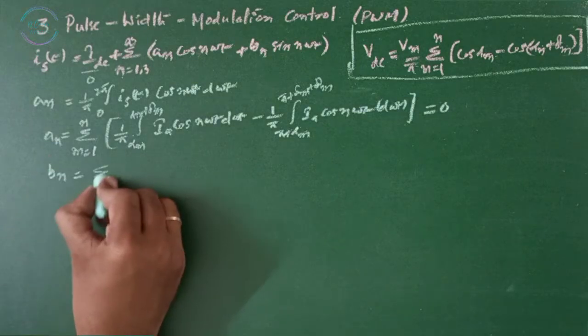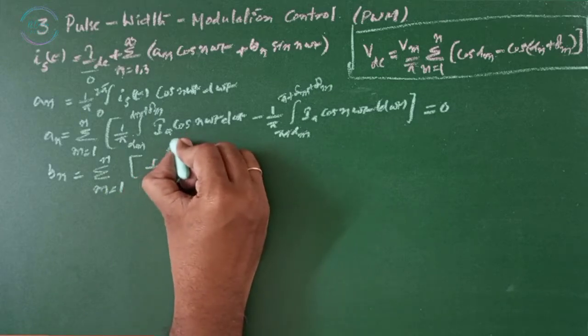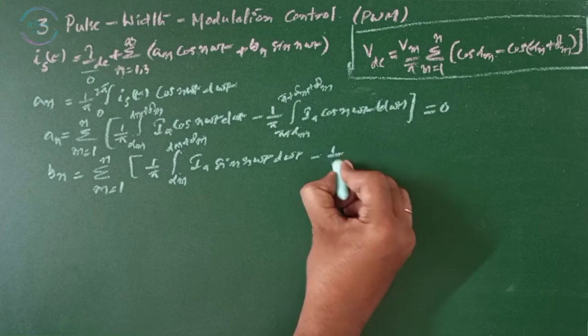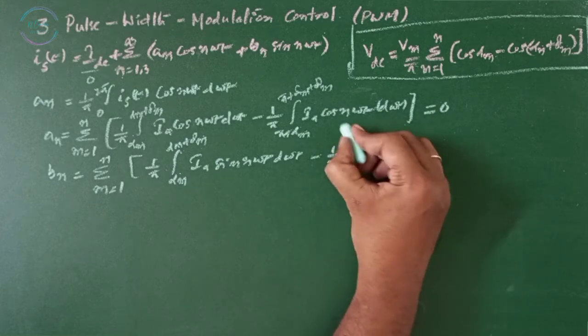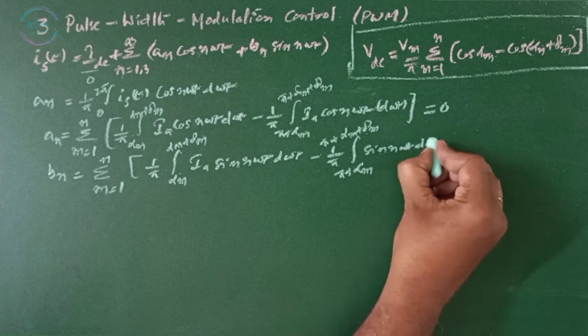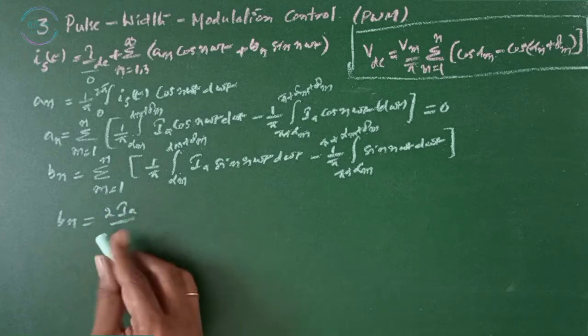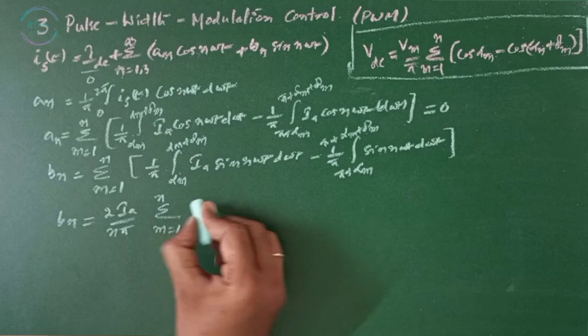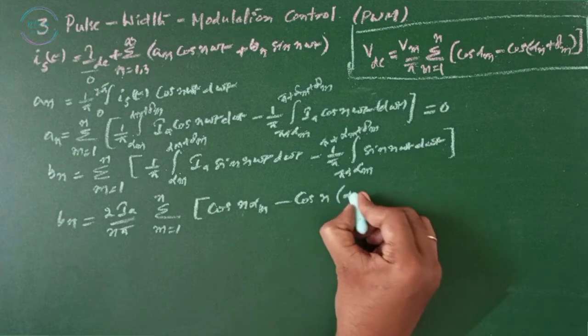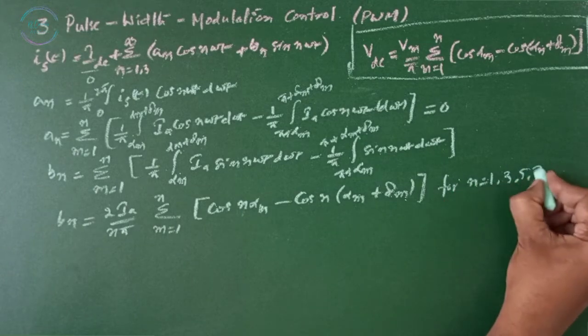Now Bn equals to sigma m 1 to n 1 by pi integral alpha m alpha m plus delta m Ia sin n omega t d omega t minus 1 by pi integral pi plus alpha m alpha m plus delta m plus pi sin n omega t d omega t. Now when you solve this, you will be getting Bn equals to 2 Ia by n pi sigma m 1 to n cos n alpha m minus cos n of alpha m plus delta m for n equals to 1, 3, 5, 7 and so on.